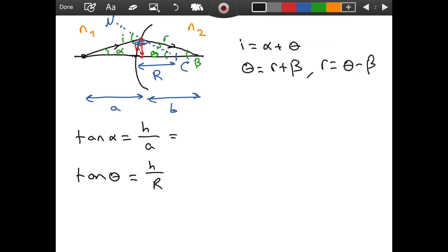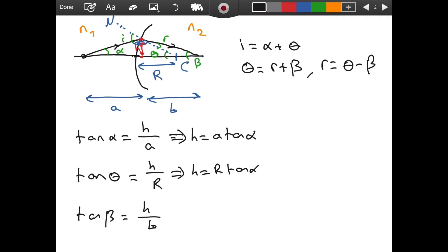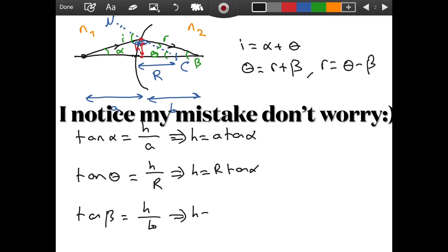And finally, what is tangent of beta? Tangent of beta is going to be, if you look at this triangle, h over b. And if I use all three of them to solve for h, I am going to get that h is equal to a times tangent of alpha. And from the below, I get h is equal to R times tangent of theta. And the other one tells me that h is equal to b times tangent of beta.